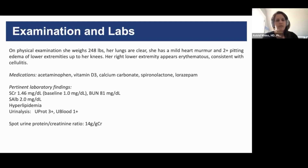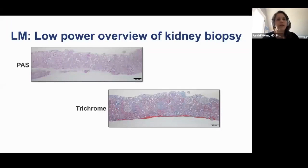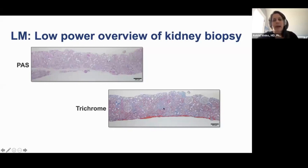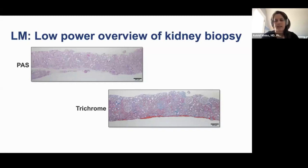Obviously, this patient presented with a full nephrotic syndrome, and that in turn prompted a kidney biopsy. Here's her kidney biopsy — a low-power overview of one of the cores. You can see the PAS stain section and the trichrome stain section. She has a background of mild chronic changes, maybe 15 to 20 percent interstitial fibrosis. You see all this blue — this is all collagen in the interstitium. Some of the tubules look mildly dilated, and the glomeruli may be a little enlarged with maybe slight mesangial expansion, but otherwise at this magnification you cannot really see much of anything.